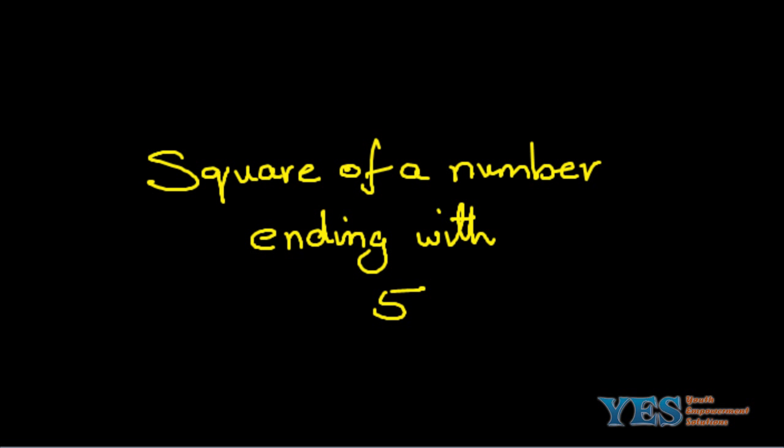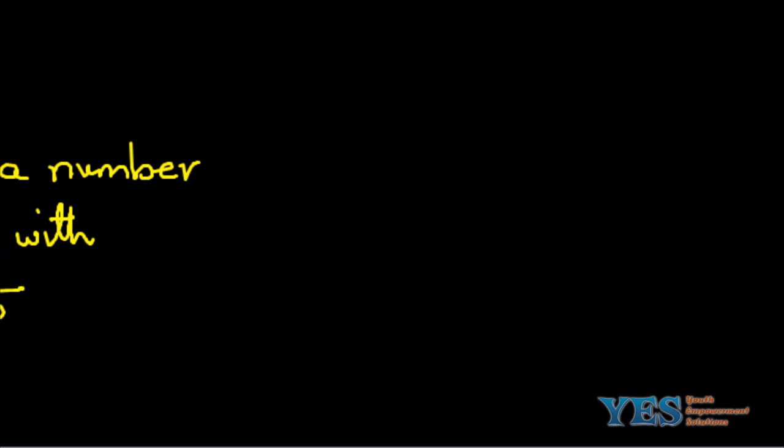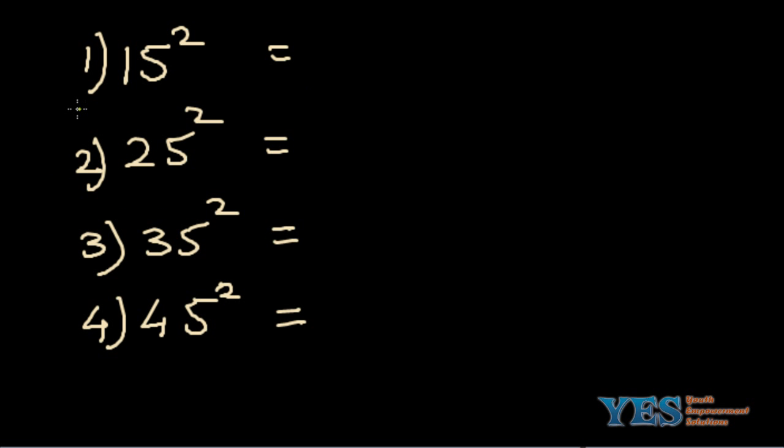So here we go. Let's find the square of the number 15. The first two digits from the right-hand side will always be 25. Let me repeat: when you're finding the square of a number that ends with 5, the answer will always have the number 25 at the right-hand side.